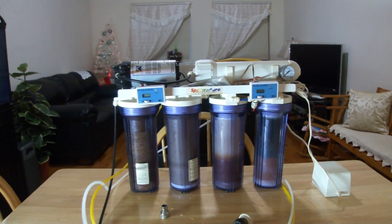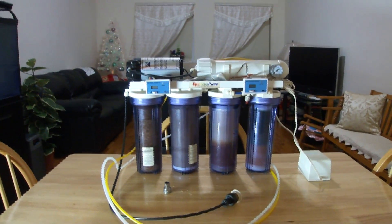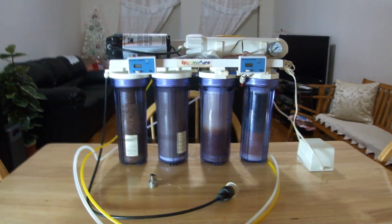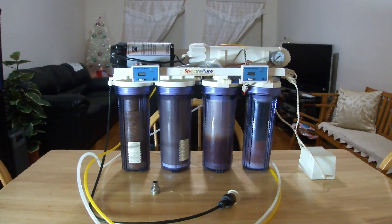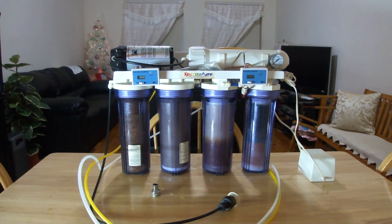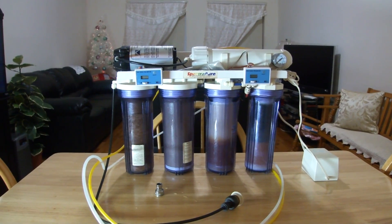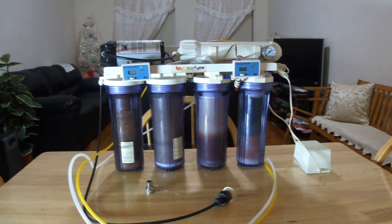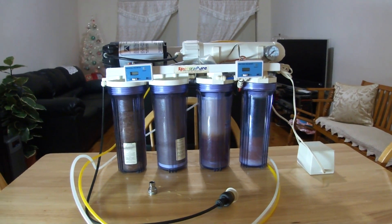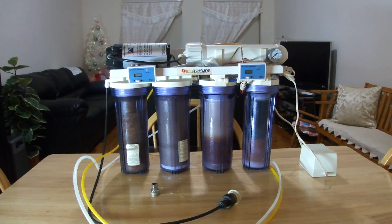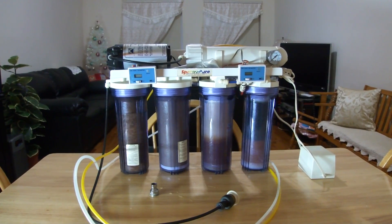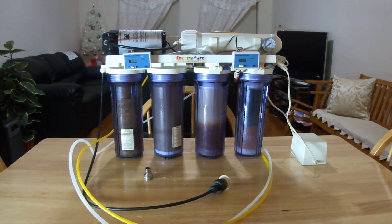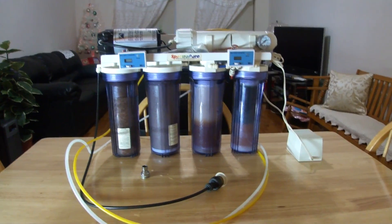You really need to question when you're looking at an RODI system that is not as expensive. It could be five stages and only a hundred bucks. You got to question yourself what kind of membrane is in there. You get what you pay for. The fact that this unit contains that Film-Tech 90 gallon per day membrane which has such a high rejection rate will actually prolong the process in which you need to replace the membrane and the stages that follow it.